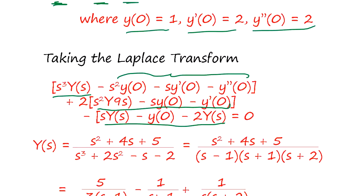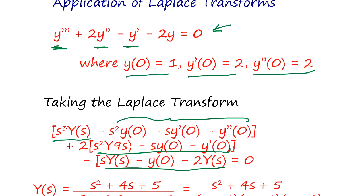Something is missing here. Yeah, 2y. So minus 2Y(s) equals 0.